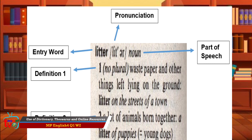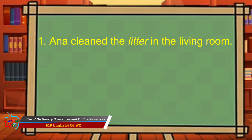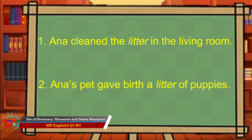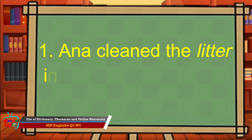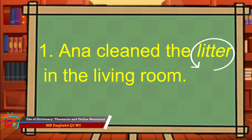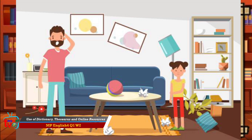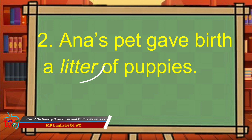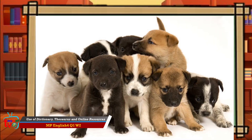Let's look at the sentences and answer the following questions. Ana cleaned the litter in the living room. Ana's pet gave birth to a litter of puppies. What is the meaning of the word litter in the first sentence? Correct — the word litter in the first sentence means waste or things scattered on the floor. How about the word litter in the second sentence? Yes, it means a lot of animals born together.